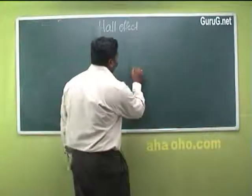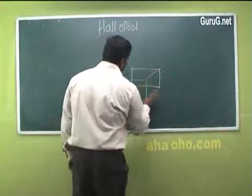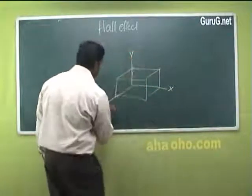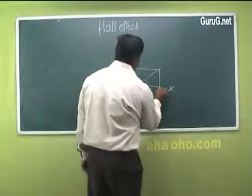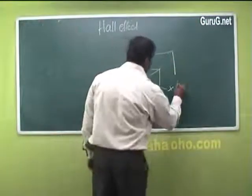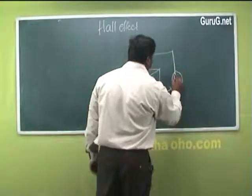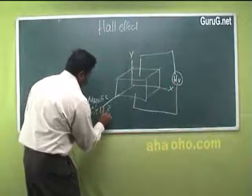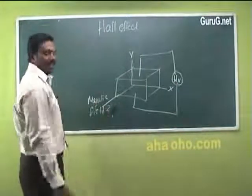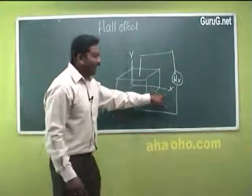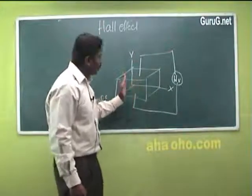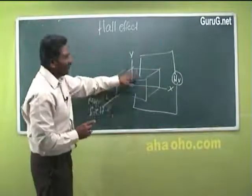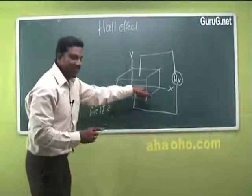Consider an n-type material with x, y, and z axes. A current is applied along the x-axis and the magnetic field is applied along the z-axis. When an electric field is applied along the x-axis from right to left, electrons will move from left to right. When the magnetic field is applied along the z-direction, the hall voltage will be developed along the y-direction, normal to both the electric field and the magnetic field.